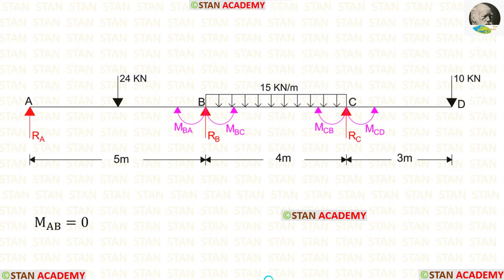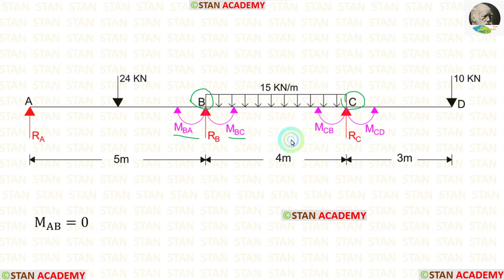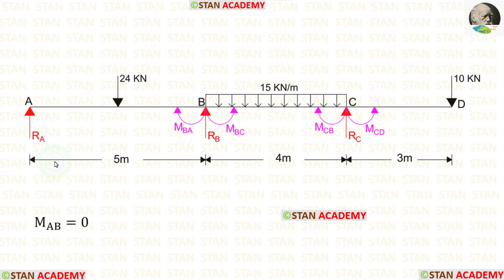At the joints, there will be 2 moments each. There are 2 joints: joint B and joint C. At joint B, we have the moments MBA and MBC. At joint C, we have the moments MCB and MCD. So in total, we have to find 4 moments. Also, we have to find 3 vertical reactions: RA, RB, and RC.